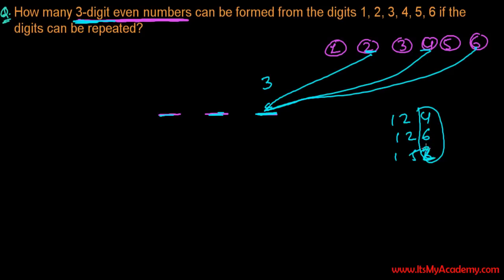You can fill the first position with any of the six digits - 1, 2, 3, 4, 5, or 6. So there are six options. Similarly, the second position can also be filled by any of the six. The first position can be filled in 6 ways, the second position in 6 ways, and the third position in 3 ways.